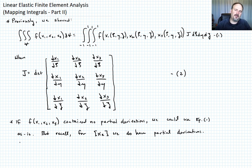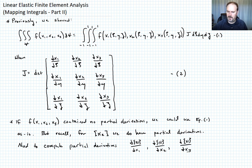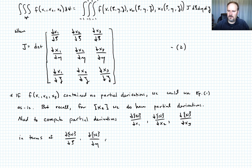So we must figure out how to compute those partial derivatives in absolute space and convert those to partial derivatives over the natural coordinates. What we need to do is compute the partial derivatives — the partial of N with respect to x1, the partial of N with respect to x2, and the partial of N with respect to x3 — and convert those, or rather compute those, in terms of the partials with respect to the natural coordinates: the partial of N with respect to xi, the partial of N with respect to eta, and the partial of N with respect to zeta.